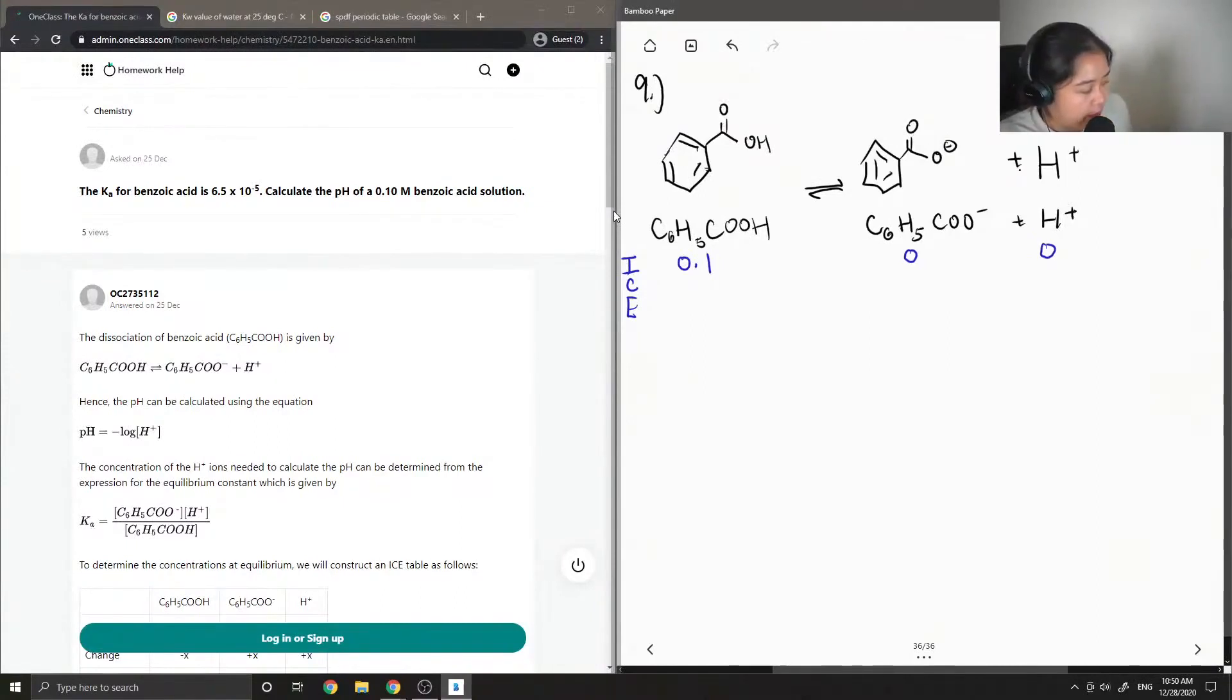And then for the change, the reactant changes by minus X and both of the products change by plus X. So at equilibrium, for benzoic acid, its concentration is equal to 0.1 minus X. And for both of our products, their concentrations will be equal to X at equilibrium.